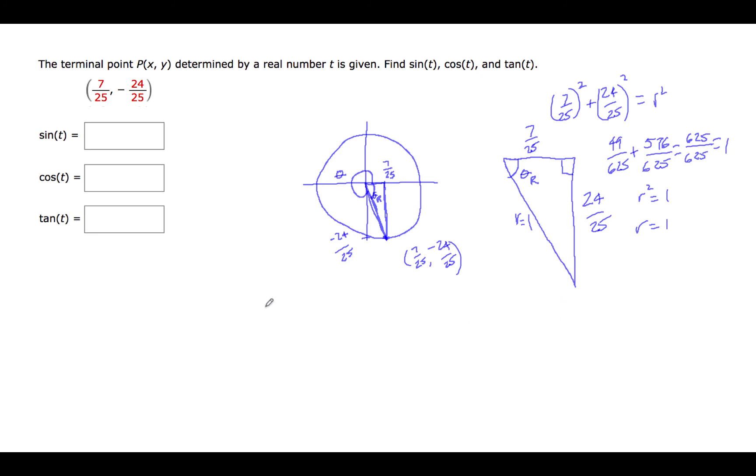Now to find the sine of this number t, we would have the opposite over hypotenuse, so 24 over 25 over 1. But we have to remember that we're in the fourth quadrant, and the sine is negative in the fourth quadrant. So this is just going to wind up being negative 24 over 25.